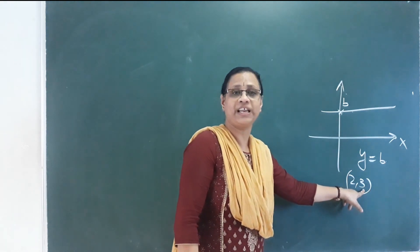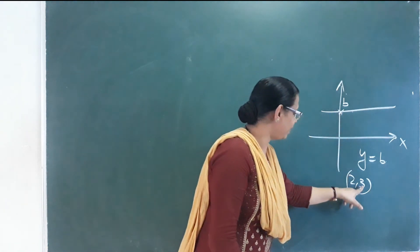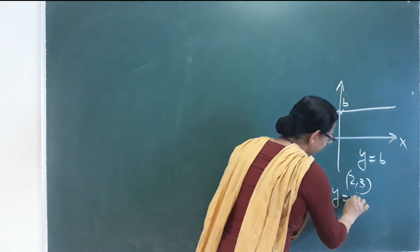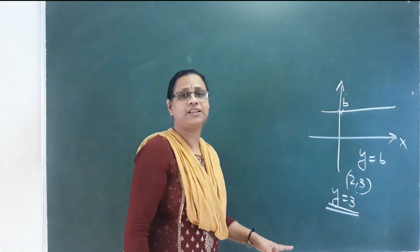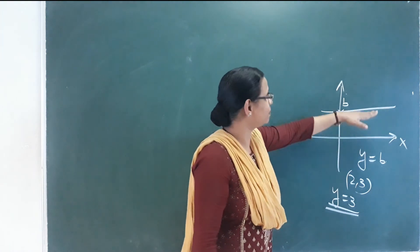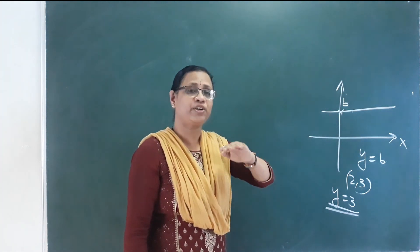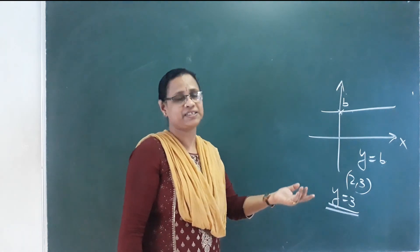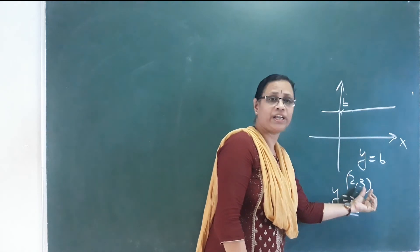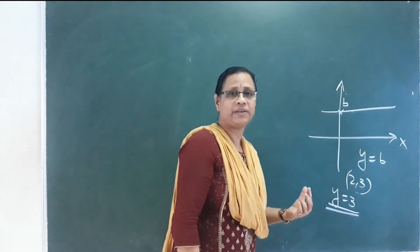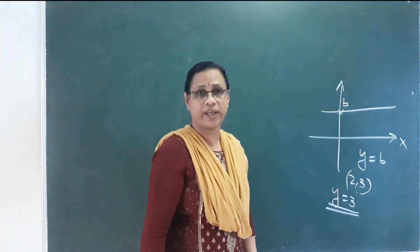If y equals 3, that line is parallel to the x-axis. The equation of a line parallel to the x-axis is y = b, for example y = 3. So if you find a line parallel to the x-axis, you can identify the y value.